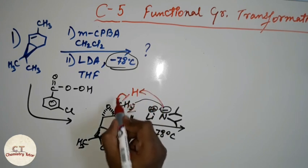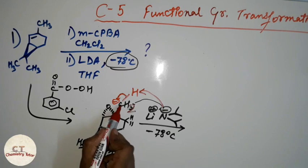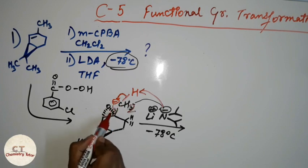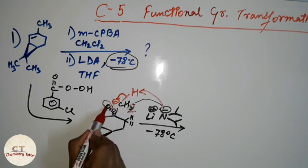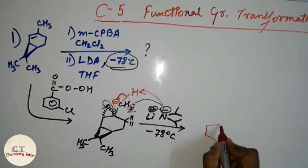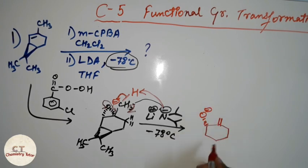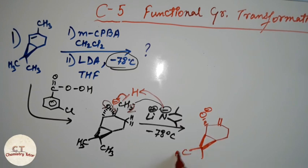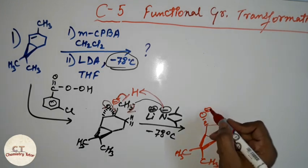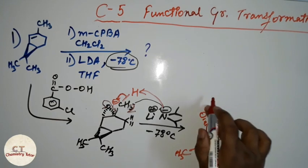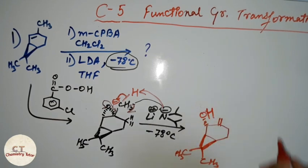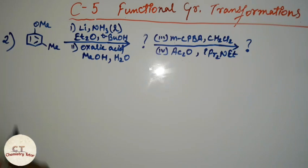There will be a negative charge on the carbon atom. This negative charge will form a bond, and the epoxide bond will break, giving us a double bond and an O minus below the plane. This group is above the plane. The O minus then abstracts a proton from the solution, becoming OH. This is the product of this reaction.